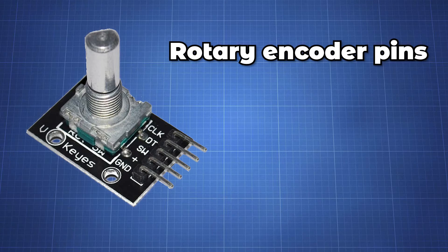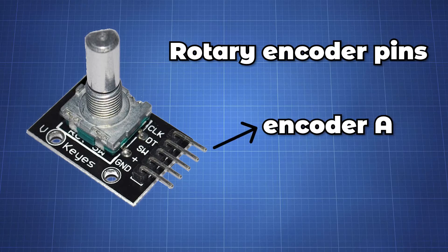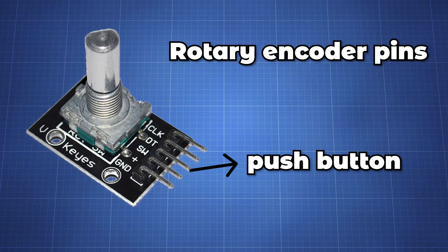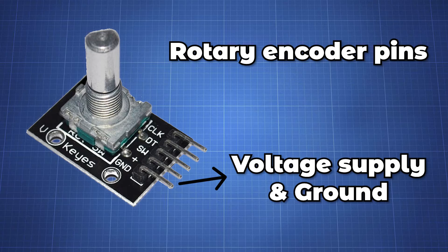The rotary encoder has five pins in total. The CLK pin which is encoder pin A, the DT pin which is encoder pin B, the SW pin which is our push button and it is normally open and shortened to the ground on press. And then finally we have our VCC pin which is our voltage supply and our ground pin.